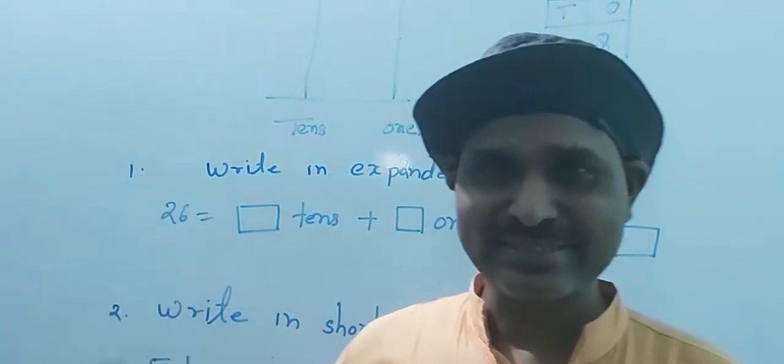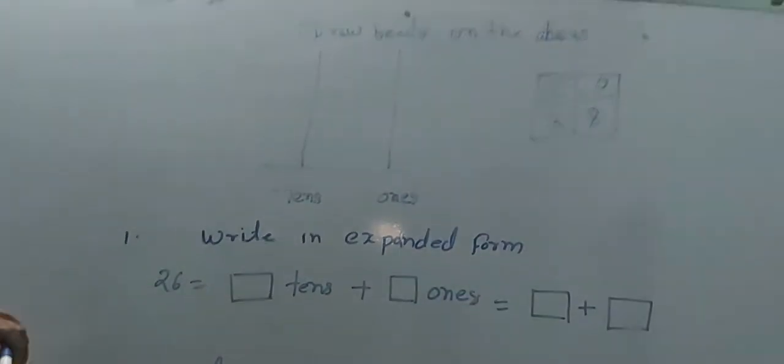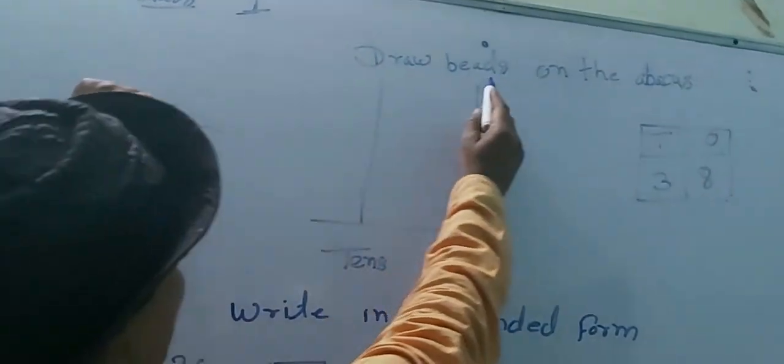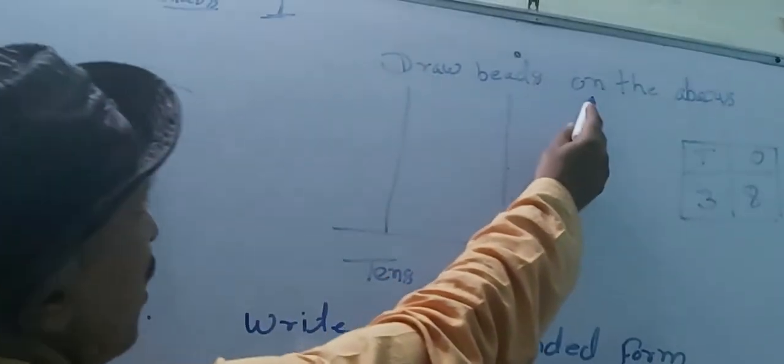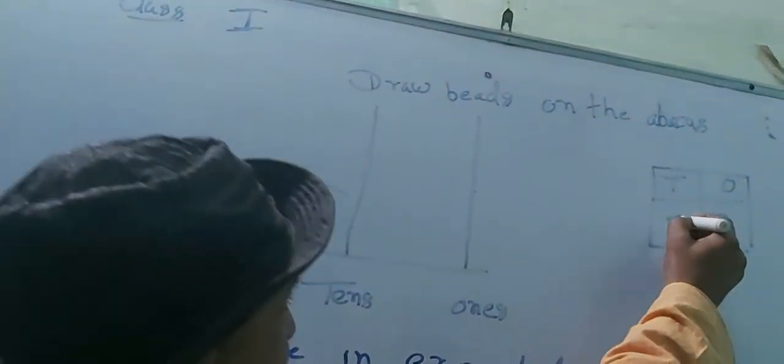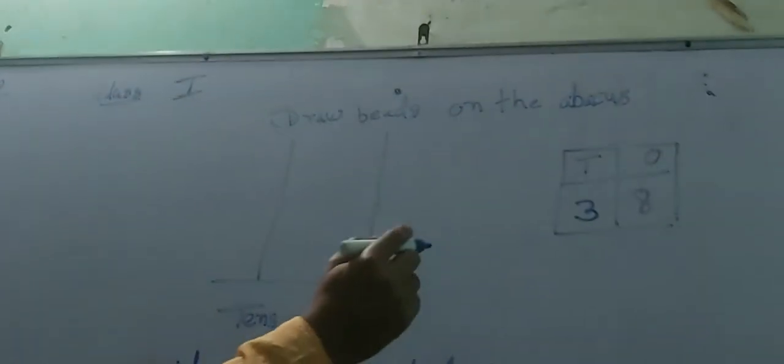Today, we will see how to make expanded form. What is this? Draw on the board. How to make this? 38 means what?